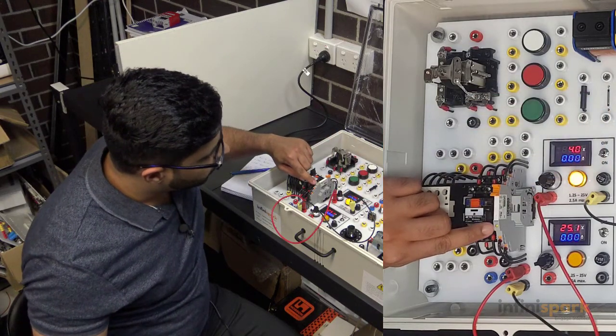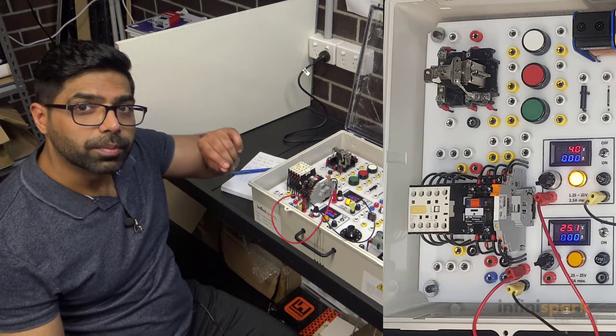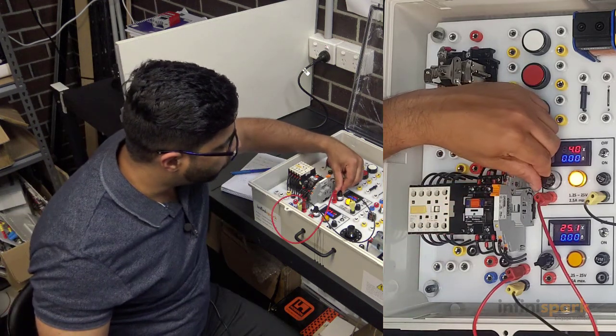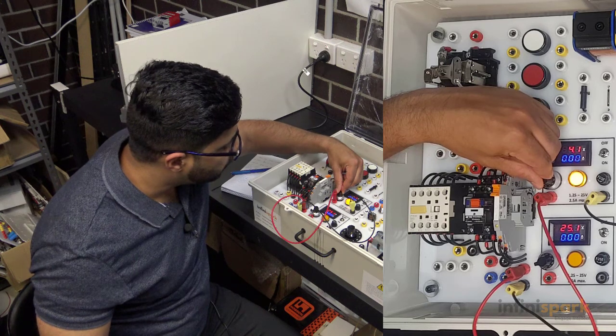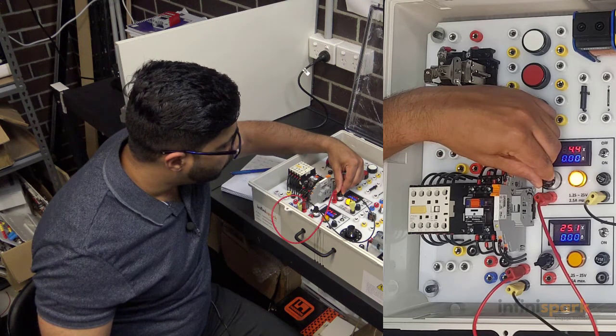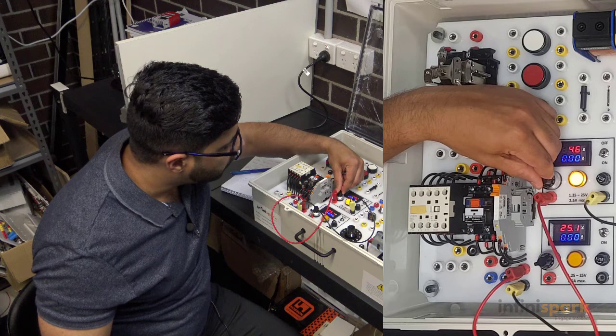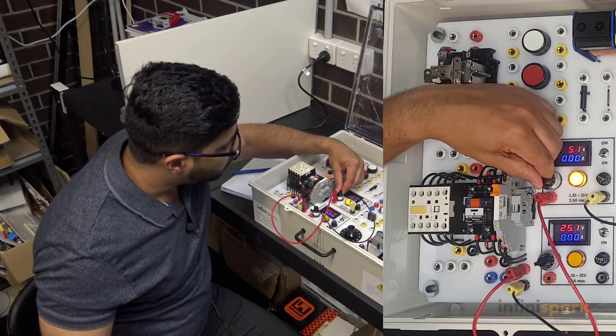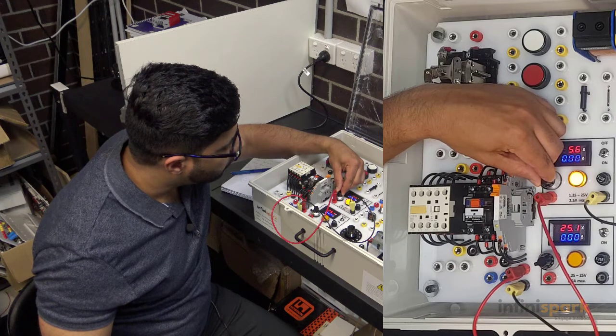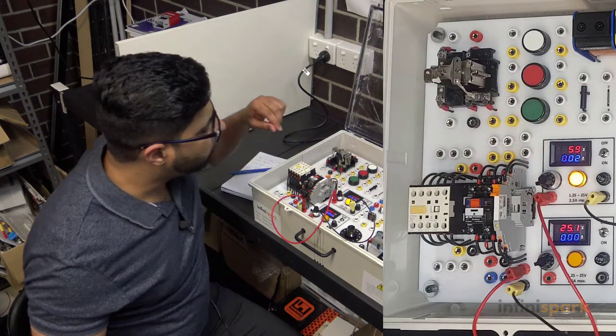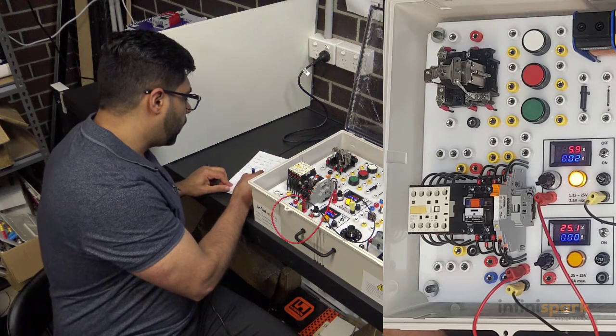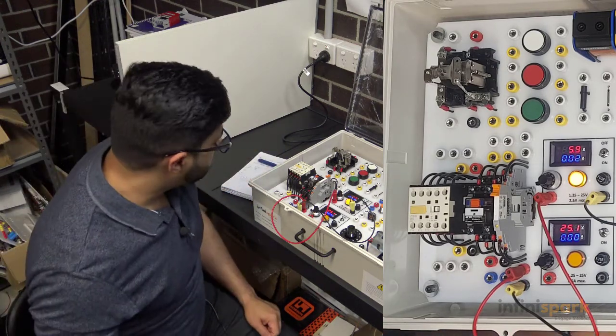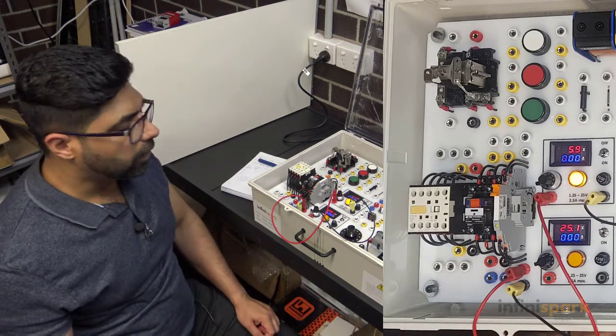This light here will turn on when the relay clicks in. Now it's a very small relay so it'll be very hard to hear, but I'm going to yell out when I hear it. At 4 volts it's not working, 4.5 not working, 5 volts not working. At 5.9 it clicks in. So unlike the open relay where it needed 7.7 volts to kick in, this one kicked in at 5.9 or 6 volts.